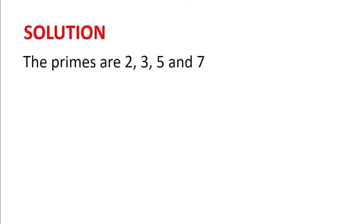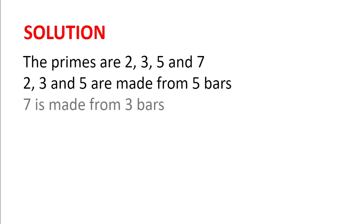So, the primes are 2, 3, 5 and 7. And 2, 3 and 5 are made from 5 bars. And 7 is made from 3 bars. So, we see that all 4 primes are made from a prime number of bars. And so, the answer is E.